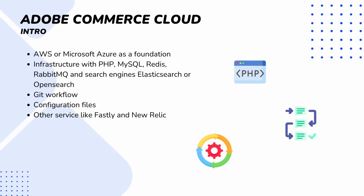Now let's take a quick look at the tech stack, and in the upcoming videos we will dive deeper into it. When you apply for Adobe Commerce Cloud, what will you receive? As a foundation you will get AWS or Microsoft Azure. You will get an infrastructure with PHP, MySQL, Redis, RabbitMQ and search engines like Elasticsearch or OpenSearch. You get a ready-to-use platform without requirements to build an infrastructure and manage those services, so everything is already prepared and configured for you.